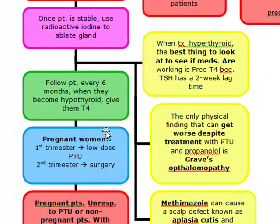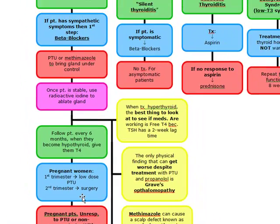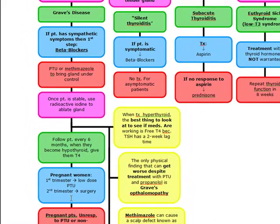In pregnant women, the management changes a little bit. If it's a first trimester pregnant woman, we're going to give the patient low-dose PTU. Second trimester and after, we're going to do surgery. We also do surgery on pregnant women that are unresponsive to PTU in the first trimester, or patients with tracheal compression.